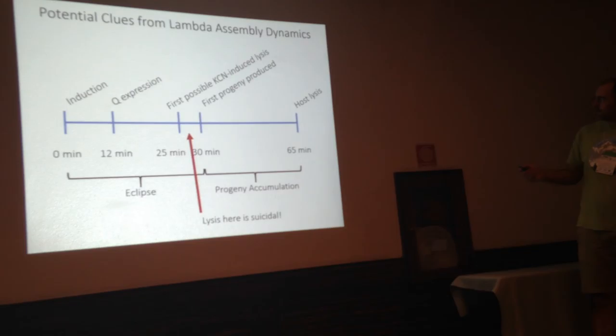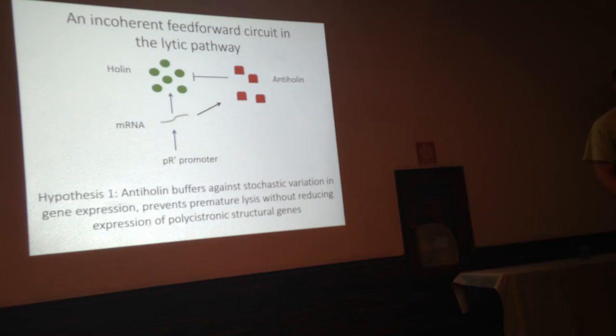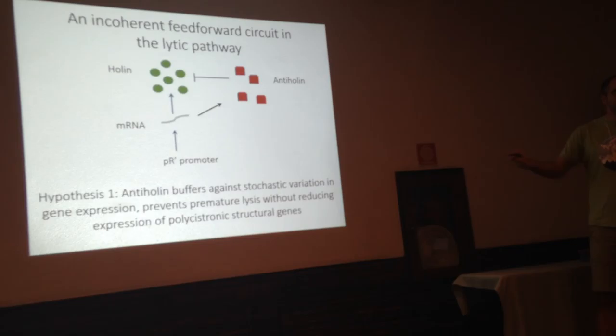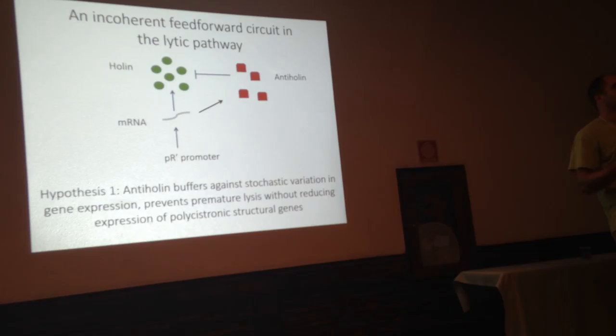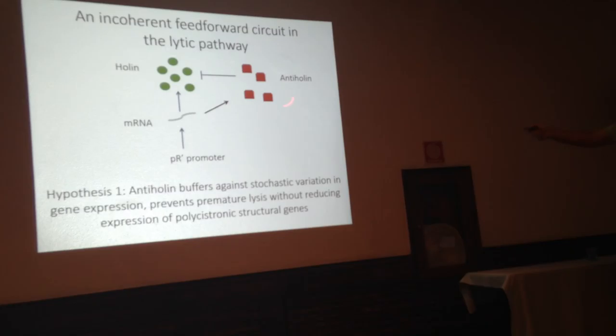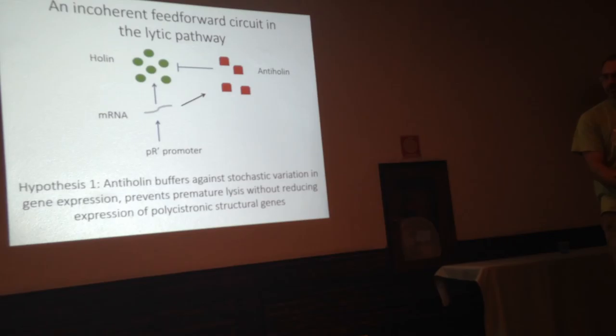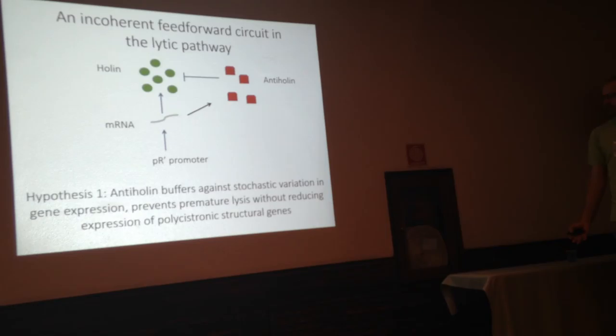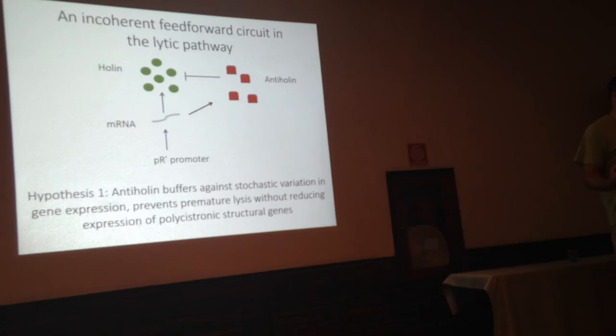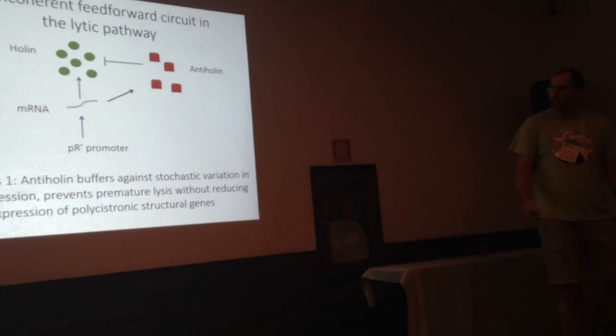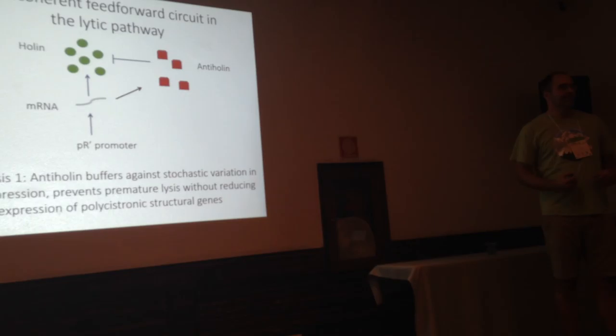Perhaps this system is an incoherent feed-forward circuit. The promoter produces two proteins of opposite effect — meaning incoherent — and the feed-forward means that the anti-holin blocks the activity of the holin. The hypothesis we have is that anti-holin reduces stochastic variation in gene expression, preventing premature lysis without reducing the expression of the structural genes. This allows maximizing expression without causing early lysis before the phage progeny have been assembled.